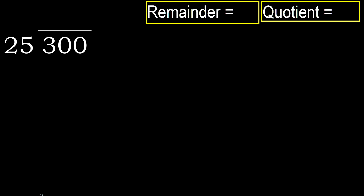300 divided by 25. 3 is less, therefore next. 30 is not less, therefore work with 30.